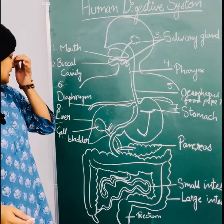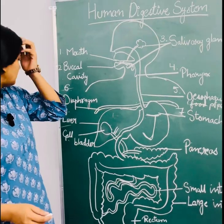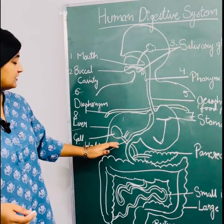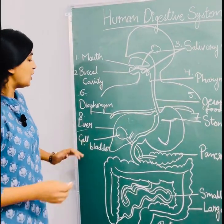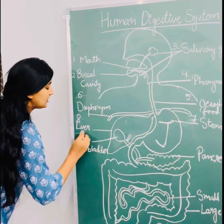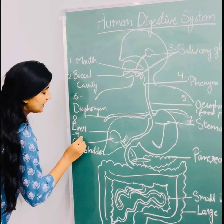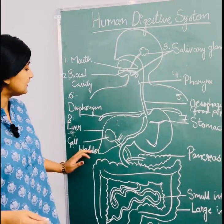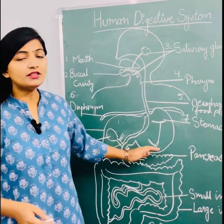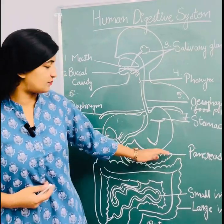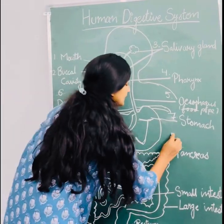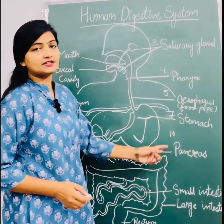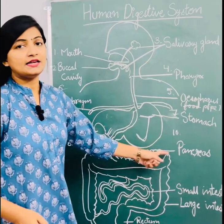On the right side of the stomach there is the liver, which is the largest gland of the human body. Inside the liver there is the gall bladder, which is round in shape and is used to secrete bile. Below the stomach there is the pancreas, which is pink in color and looks like a leaf structure.